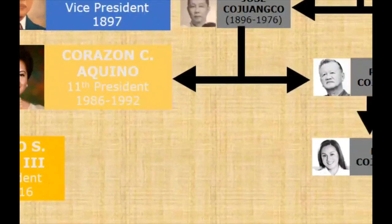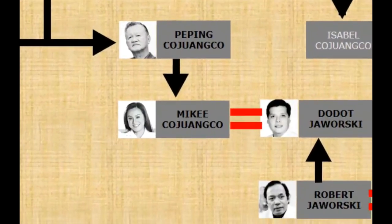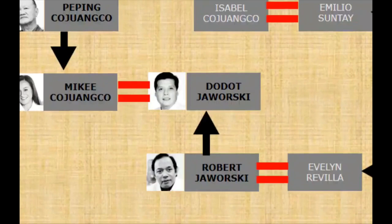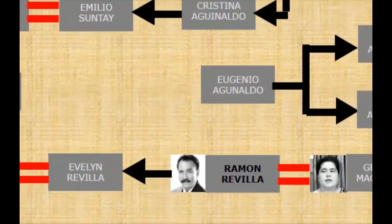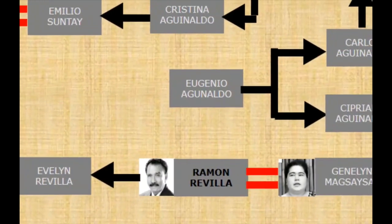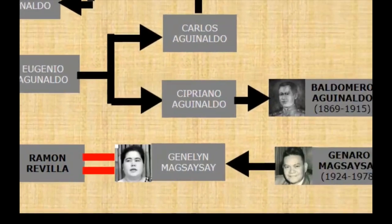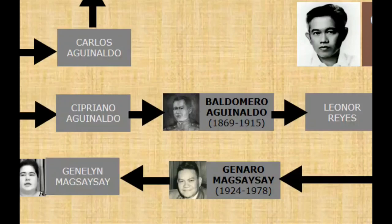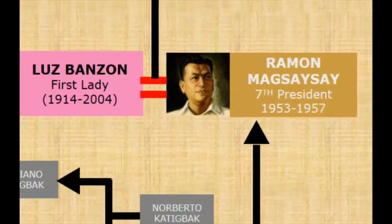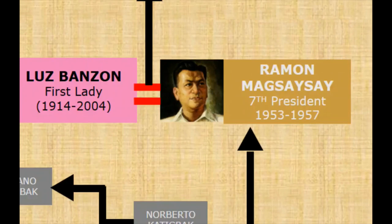A brother of Corazon, Pepin Cojuangco, had a daughter, Mikey Cojuangco, who would later marry into the Jaworski family. Her father-in-law, Senator Robert Jaworski, married Evelyn Revilla, who in turn was the daughter of Senator Ramon Revilla. Senator Ramon Revilla had many partners, including Jeneline Magsaysay, who was a daughter of Genaro Magsaysay, another senator of the Philippines and a brother of former President Ramon Magsaysay Sr. — the seventh president of the Republic, serving from 1953 until his untimely death in 1957. President Magsaysay was known as the People's President, the Champion of the Masses, and Champion of Democracy, whose administration was identified with the credo: 'Those who have less in life should have more in law.'